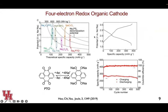Later we moved to a different organic compound called PTO — pyrene-4,5,9,10-tetraone. This is a four-electron, four-carbonyl-group sodium reaction, giving over 400 mAh/g capacity and over two volts. We also showed this is quite stable — cycling over 500 cycles at the early stage.